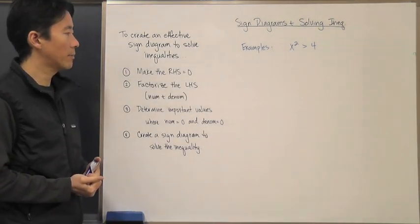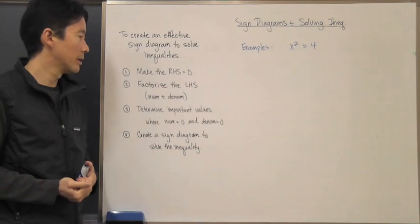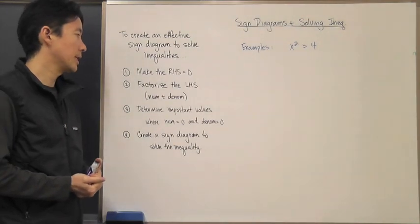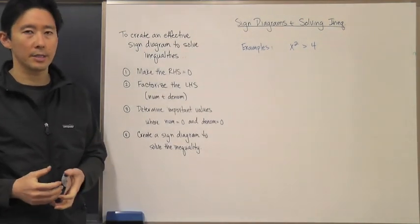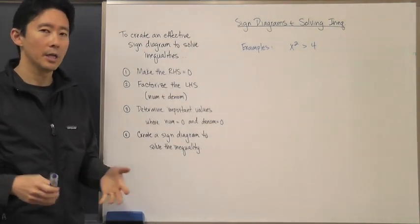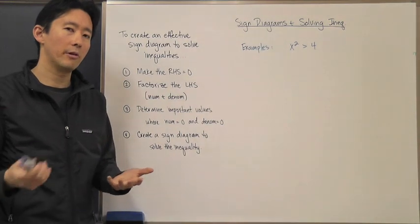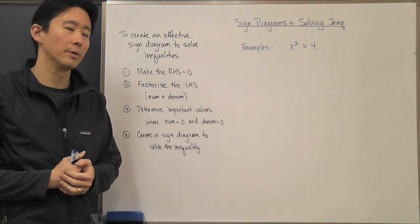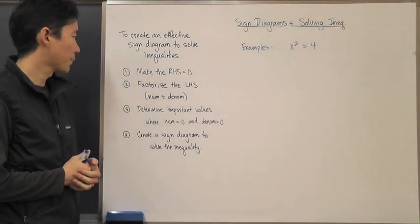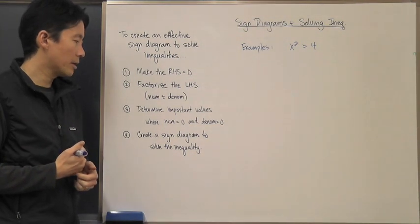The first thing is that we always want to make the right-hand side equal to zero. The next thing is that we want to factorize the left-hand side of the equation, and if that means there's a numerator and a denominator then we need to factor both of those.